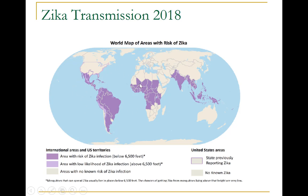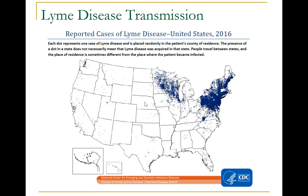Zika transmission is another new disease, and you can see that since 2016 there has been a huge scare, with the virus spreading in many countries around the globe. Lyme disease, on the other hand, is mostly isolated in the northeastern U.S. Each dot represents one case of Lyme disease placed randomly in the patient's county of residence. The presence of a dot in a state does not necessarily mean Lyme disease was acquired there, since people travel and the place of residence may differ from the place of infection.